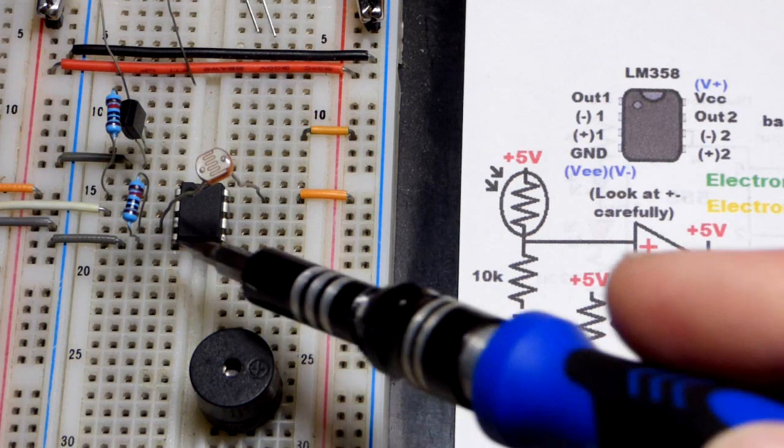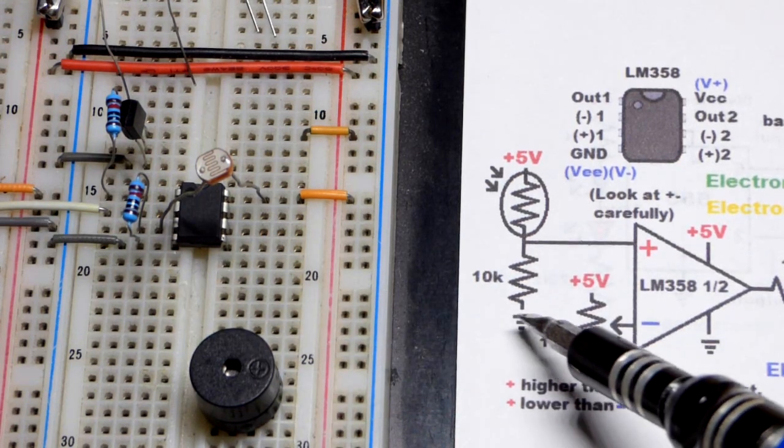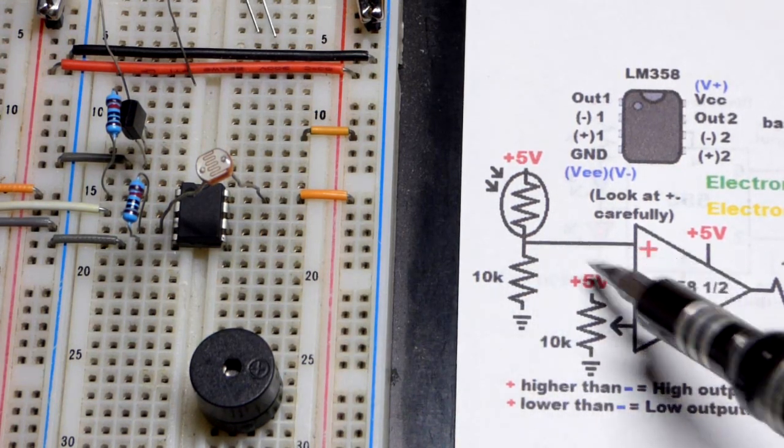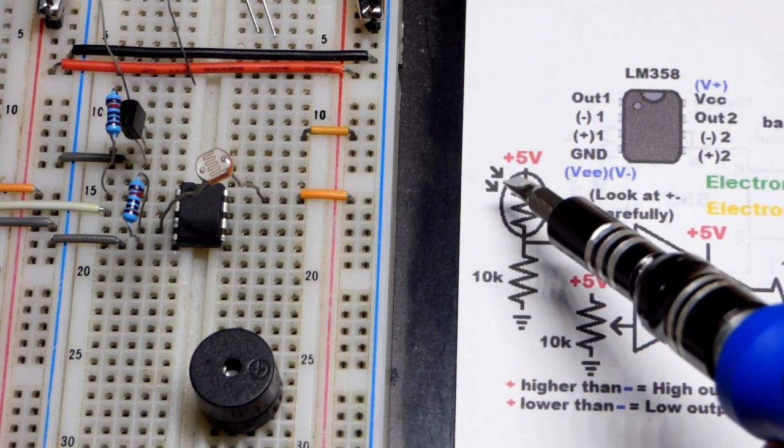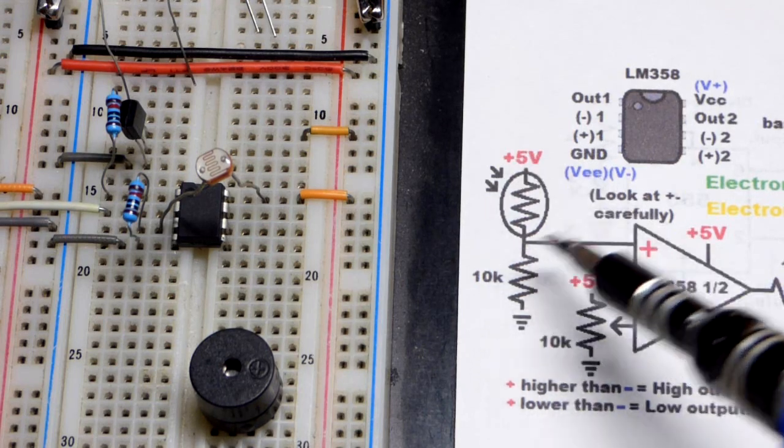We have a 10,000 ohm resistor again to the non-inverting input. Right below it is ground because that jumper comes across. We're just going to connect right down there. This pulls the voltage down.